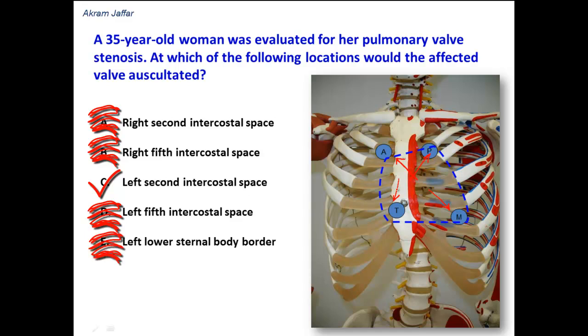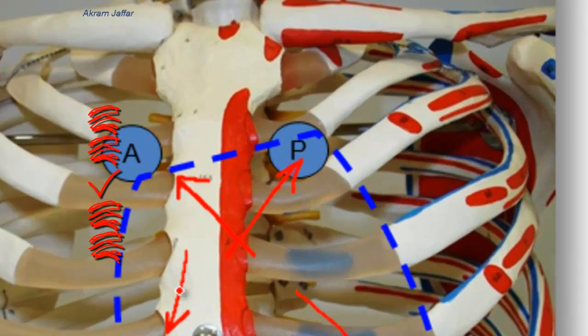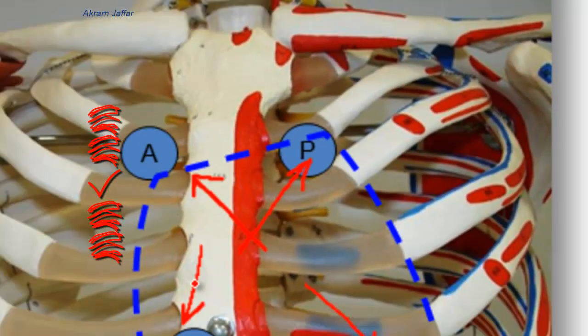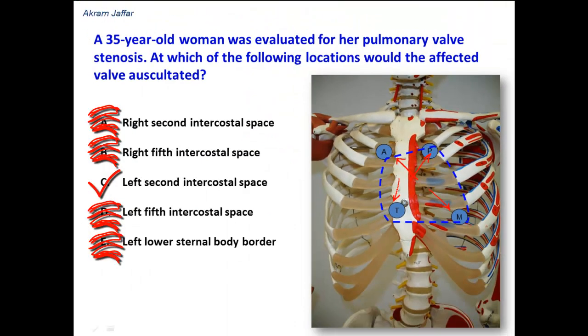So the correct option here: the auscultatory area of the pulmonary valve is the left second intercostal space, just to the left of the sternum.